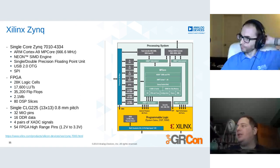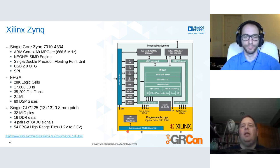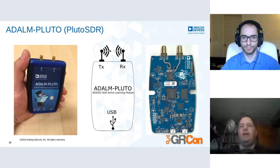For those unfamiliar with the Zynq, you can think of it as a Raspberry Pi Zero — a single-core ARM — combined with a small FPGA, all in a small 13×13mm package. That includes USB 2.0 on the peripheral side in a single chip. We actually run Linux on the Pluto itself, and we'll show that in a little bit.